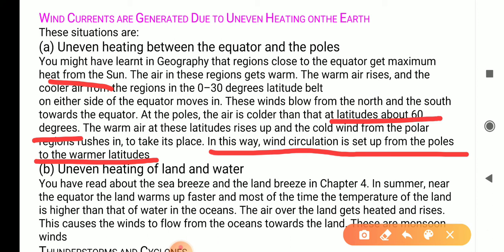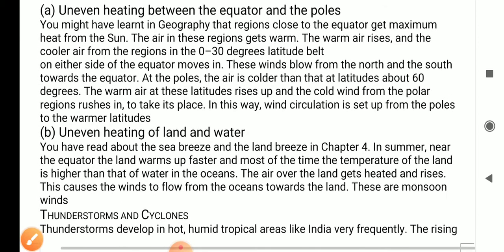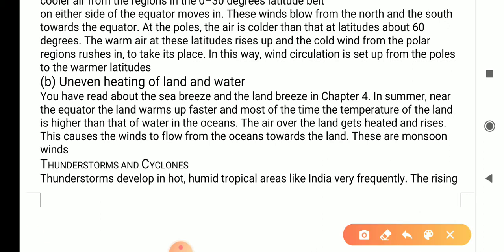Uneven heating of land and water. You have read about the sea breeze and the land breeze in chapter 4. In summer, near the equator, the land warms up faster and most of the time, the temperature of the land is higher than that of the water in the ocean. The air over the land gets heated and rises. This causes the wind to blow from ocean towards land.